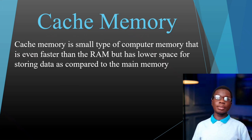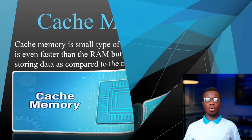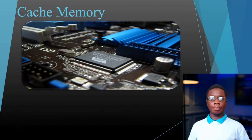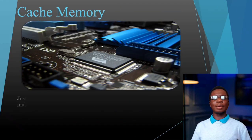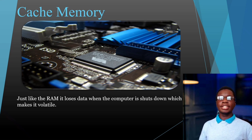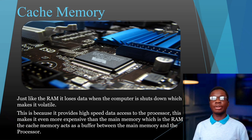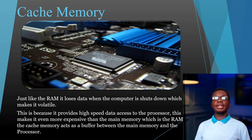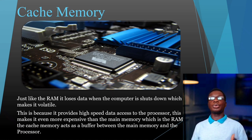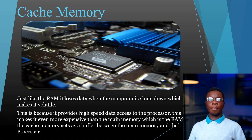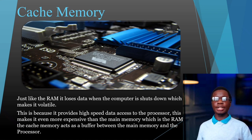Although RAM already comes with relatively low capacity, cache memory comes with even lower capacity than the RAM. Just like RAM, cache memory is volatile memory — it loses data when the computer is shut down or over time. It is not permanent memory for storing data.